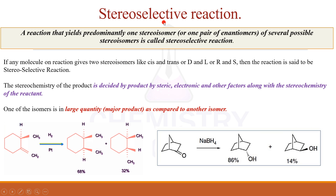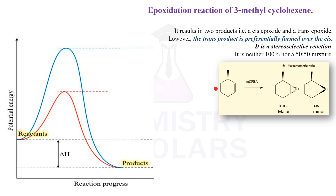What is a stereoselective reaction? Out of the different possibilities of products, one of the products is formed in a larger amount — that is a stereoselective reaction. For example, hydrogenation of this compound gives 68% of the cis form — one major and one minor. The deciding factors here are steric hindrance, electronic effects, and other aspects. Out of the different isomers, one of the isomers is formed in a major amount.